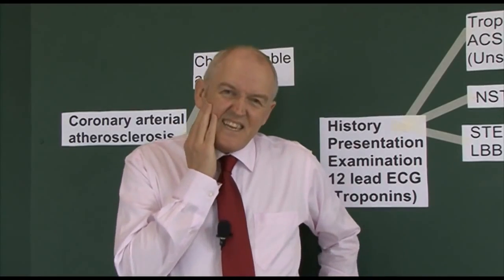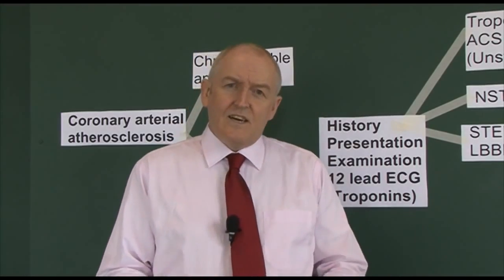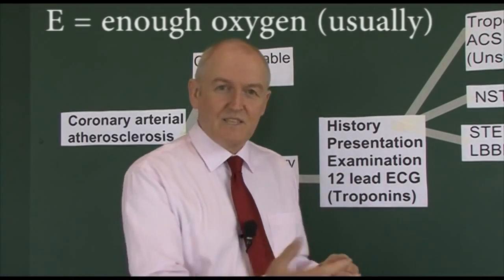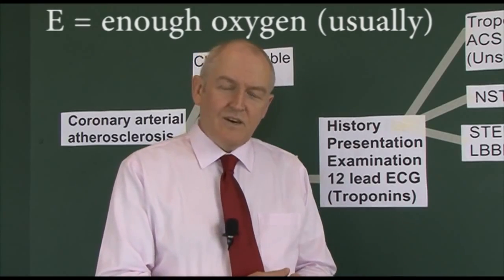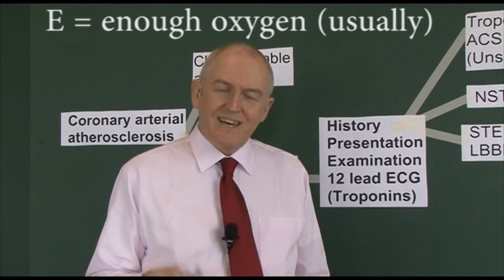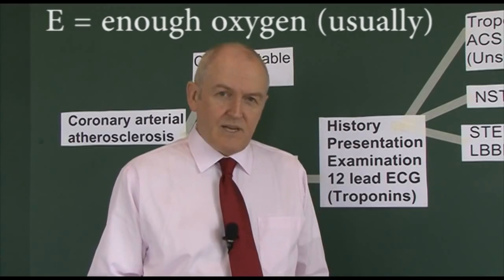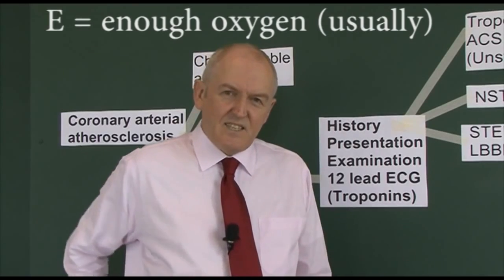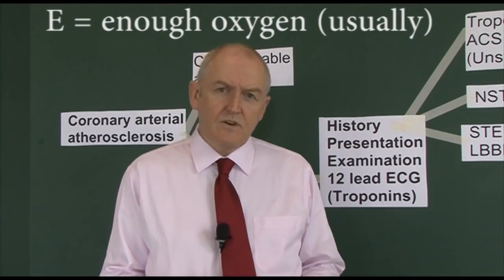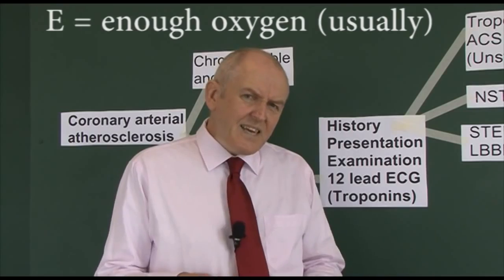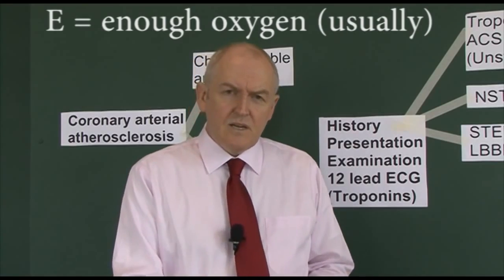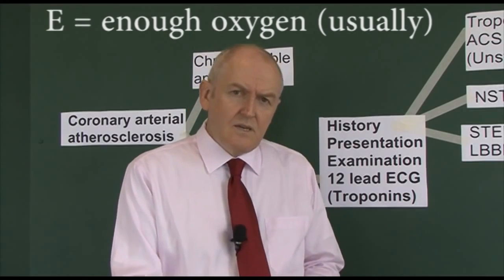E is for oxygen. For years, as soon as a patient came into coronary care we'd put oxygen on them to maximise oxygenation of the myocardium. However, new research and guidelines say we should only give additional oxygen if the patient is hypoxaemic - if their SATs are 94% or less. If SATs are higher than 94%, we don't give oxygen. The thinking is that oxygen increases free radical formation in the myocardium, increasing myocardial necrosis.